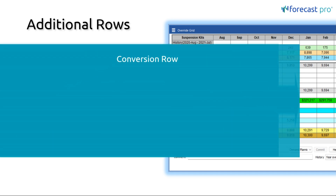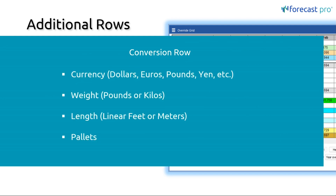We'll begin with the conversion rows. With conversion rows, we can change to different units of measure. By far the most common is currency — whether you're changing this to dollars or euros, so we can see the data in both units and in currency. Another common conversion would be into weight, whether pounds or kilos. For manufacturing, you can think of length, whether linear feet or meters. And if you're working on a shipping or inventory problem, converting into pallets or containers can sometimes be a good conversion as well.